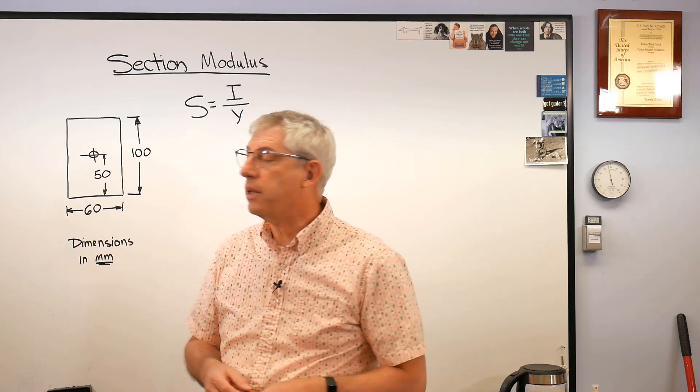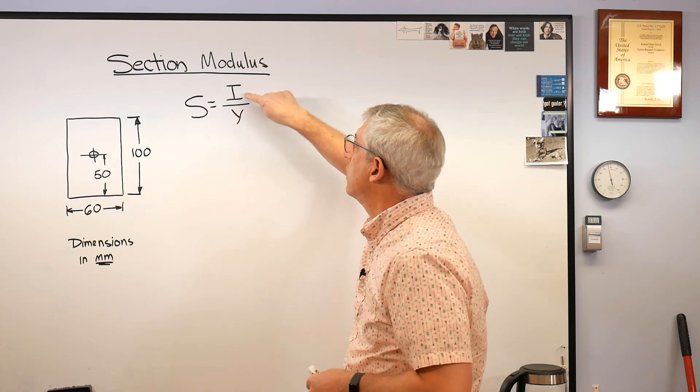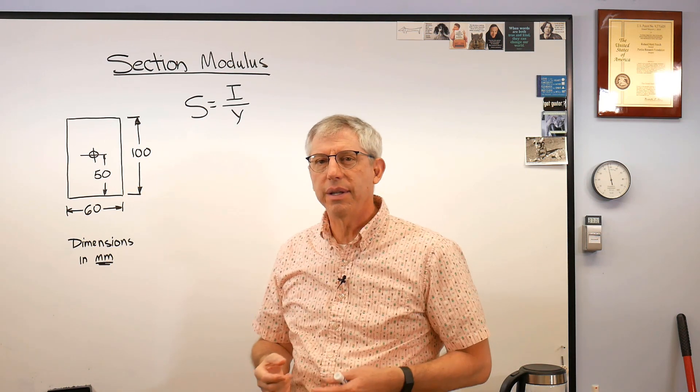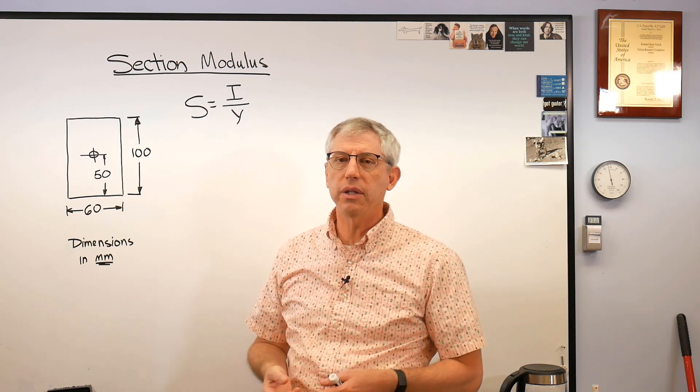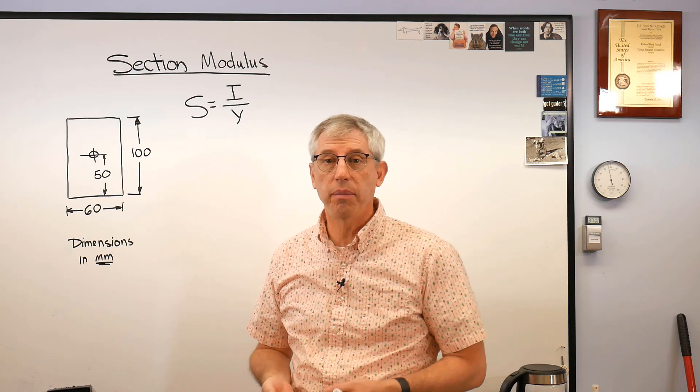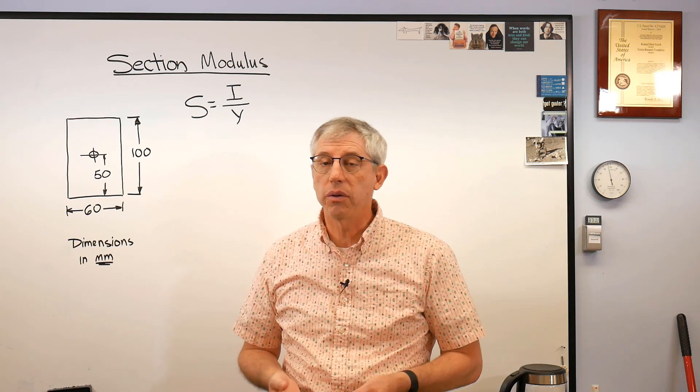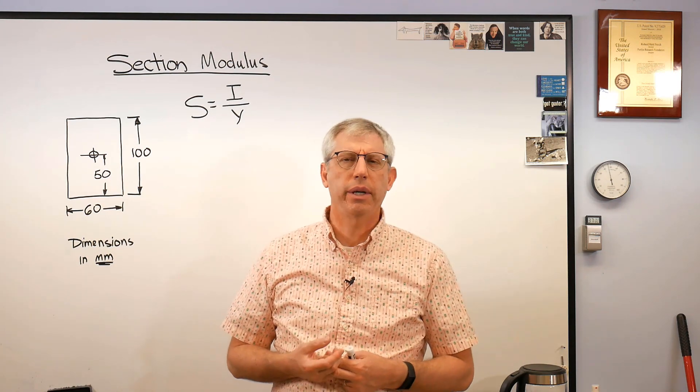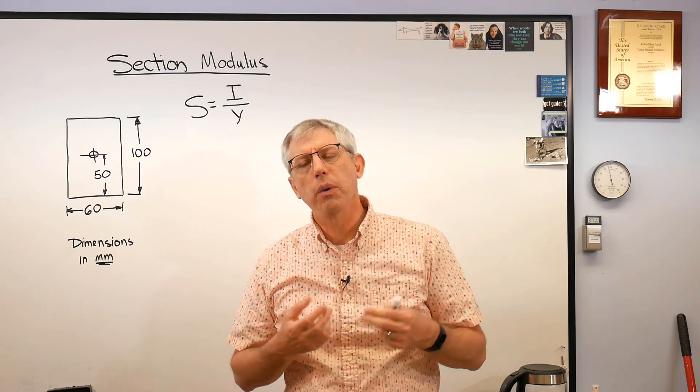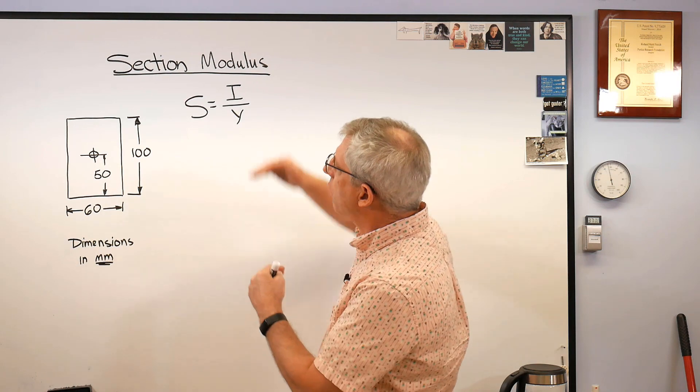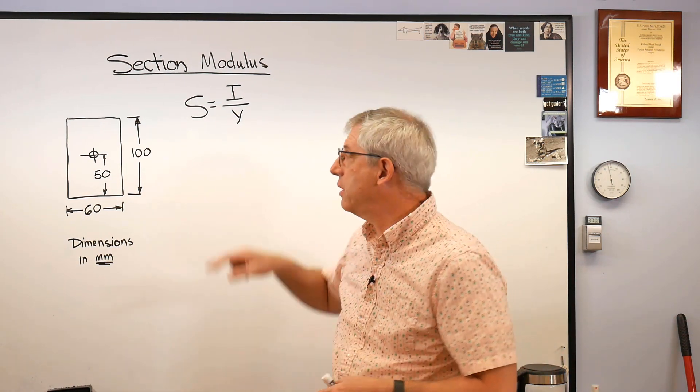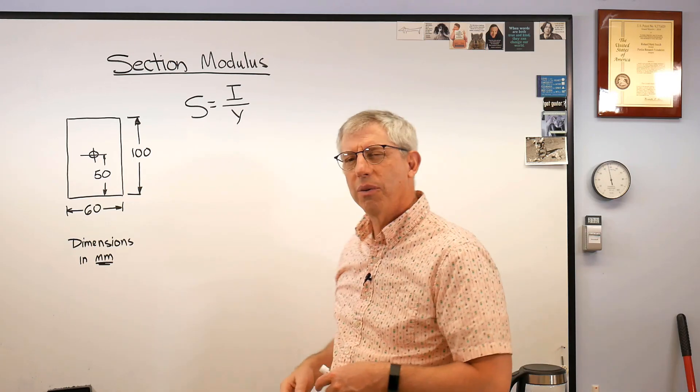Well section modulus, the definition is I over Y where I is the area moment of inertia and Y is a distance. Now if you look in the books it says the distance from the elastic axis of the beam, which is really its centroid, to the most distant fiber. Well metal beams don't have fibers. What they mean is how far the farthest away you can get from the elastic axis or the centroid. That's what Y is. So I over Y.